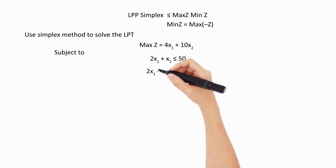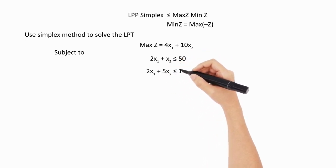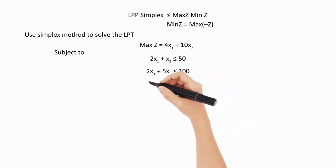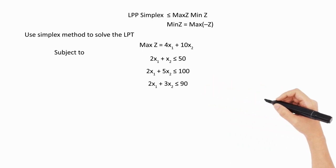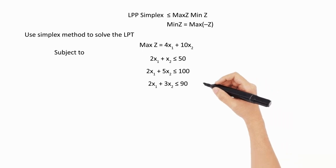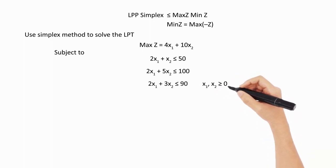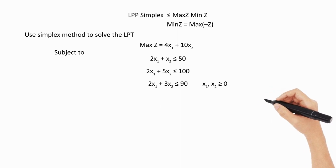Then we have 2x1 + 5x2 ≤ 100, then we have 2x1 + 3x2 ≤ 90. These are the different constraints that they have given, and also there is a non-negativity condition which is mentioned: x1, x2 are two variables which are always positive.